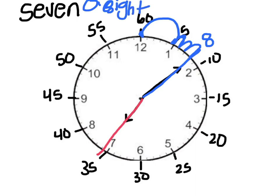Seven oh eight. And to write it as a digital time, I can write it like this. Seven oh eight. Seven, the hour is seven, and we're eight minutes past seven.